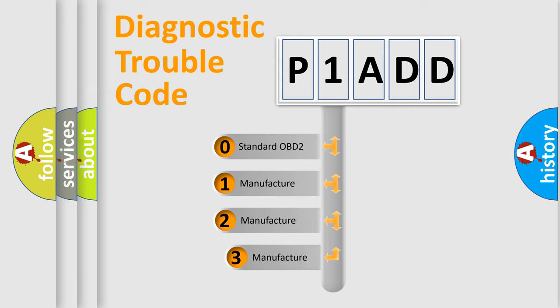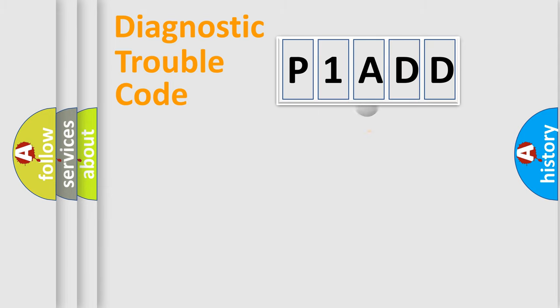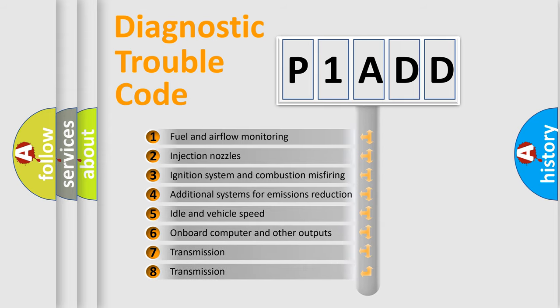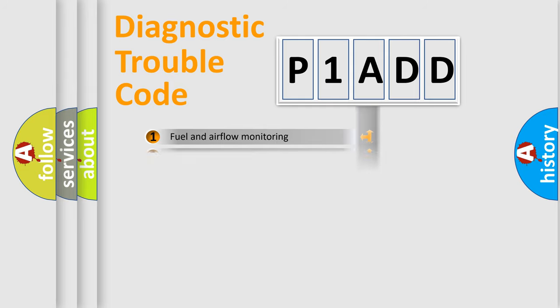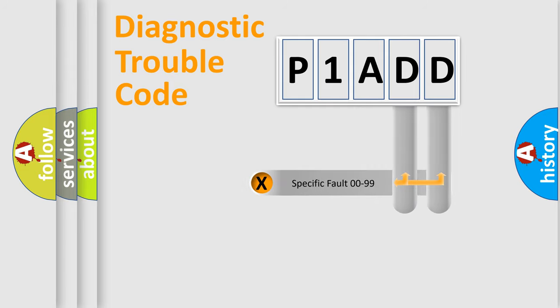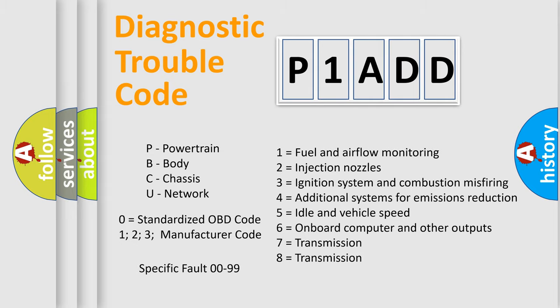If the second character is expressed as zero, it is a standardized error. In the case of numbers 1, 2, or 3, it is a manufacturer-specific error code. The third character specifies a subset of errors. This distribution is valid only for the standardized DTC code. Only the last two characters define the specific fault of the group. This division is valid only if the second character is expressed by the number zero.